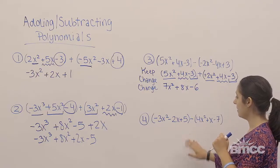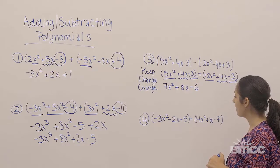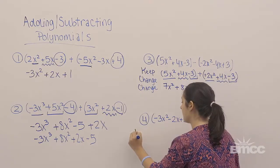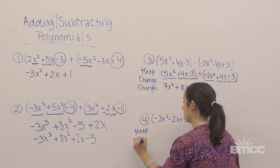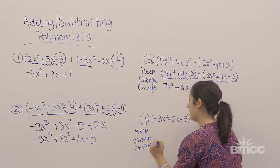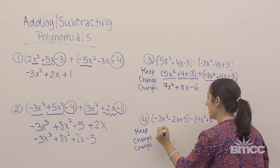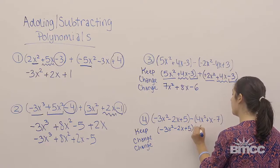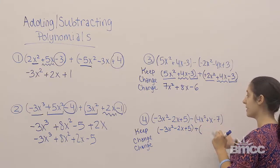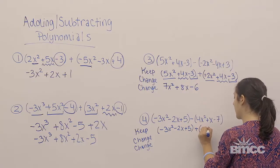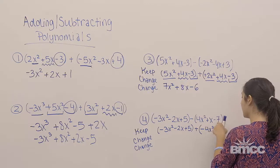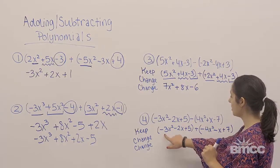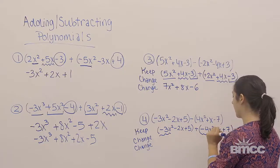Now let's look at another example: negative 3x squared minus 2x plus 5 minus 4x squared plus x minus 7. We're going to use the same process of keep change change. I keep my first polynomial and rewrite negative 3x squared minus 2x plus 5. I change the subtraction sign to addition and change each sign in the second polynomial: positive 4x squared becomes negative 4x squared, positive x becomes negative x, and negative 7 becomes positive 7. Now I add: negative 3x squared and negative 4x squared are like terms.